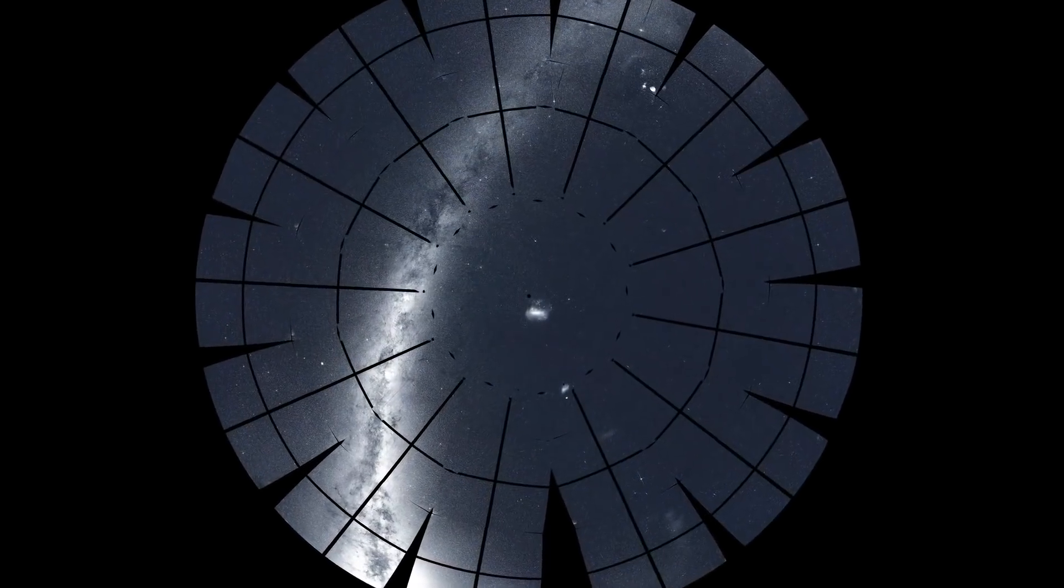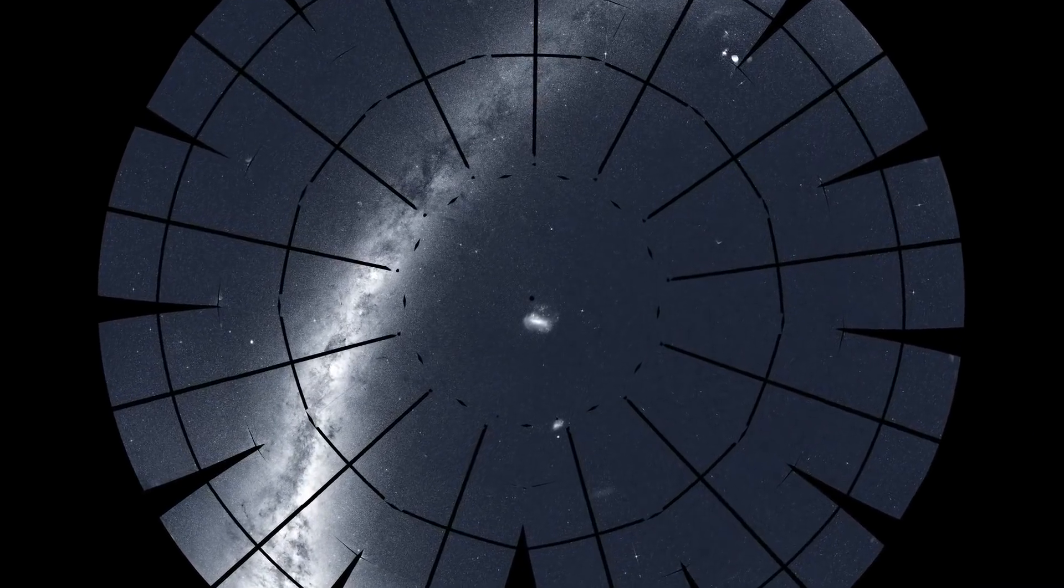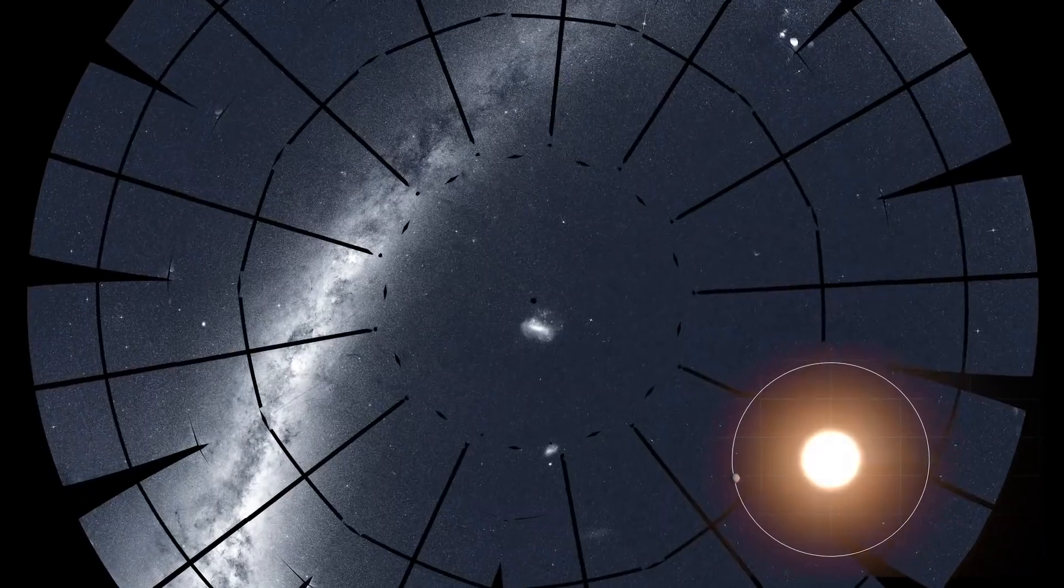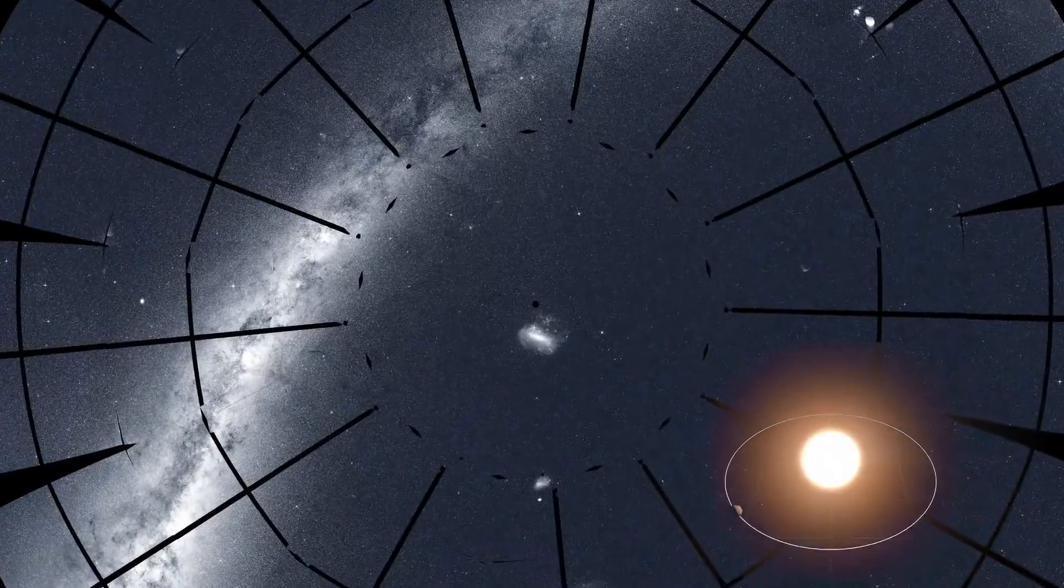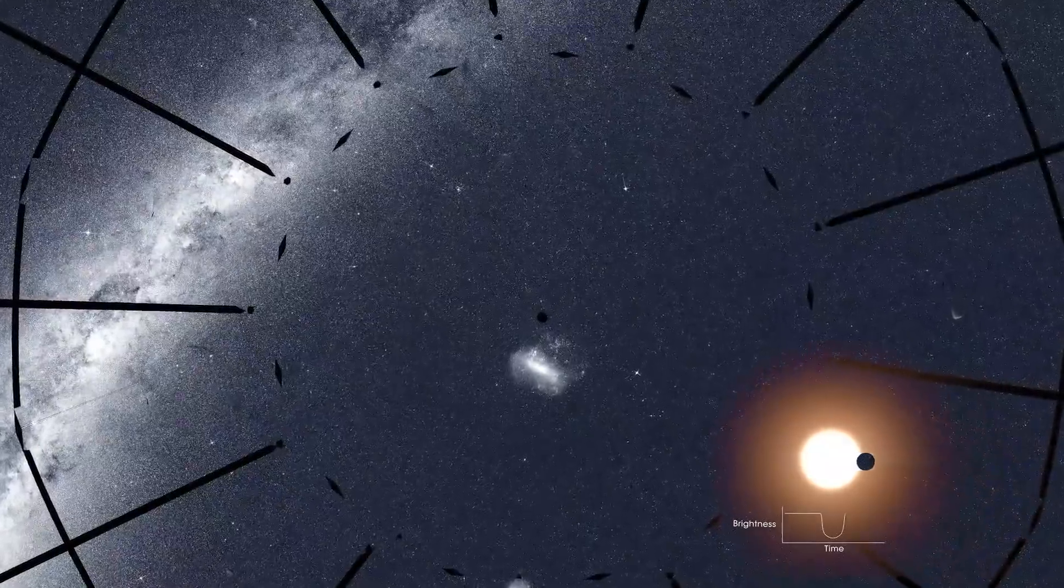TESS stares at patches of sky for long stretches, recording light from thousands of stars. Some of these stars have planets that cross or transit in front of them. TESS sees these events as tiny, regular dimmings of the host stars.